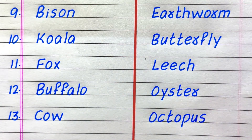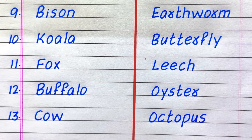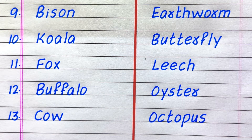9th example of a vertebrate animal is bison, 10th koala, 11th fox, 12th buffalo, 13th cow.